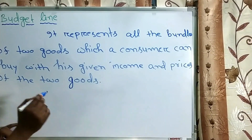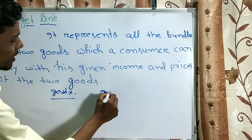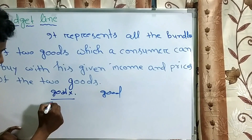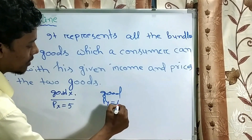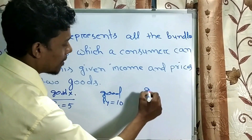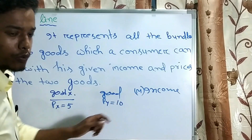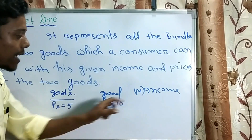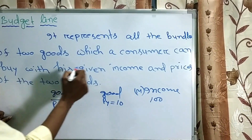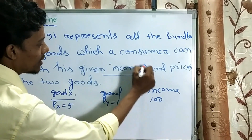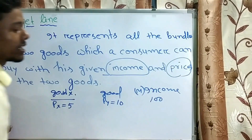Suppose you are consuming two goods — good X and good Y. The price of good X is 5 and the price of good Y is 10. The income level of the consumer, represented here as M, is 100. In the definition, we already assume that the income of the consumer is given and the prices of the two goods are given.